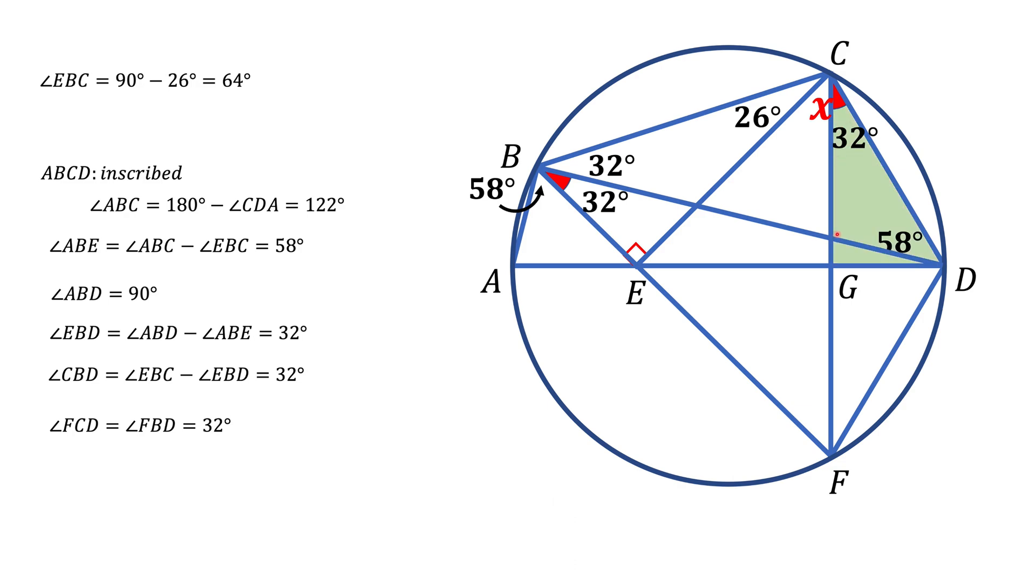Now look at this green triangle CGD. We know two angles in this triangle: 32 and 58 degrees. Therefore, the remaining angle is 90 degrees. It's a right triangle.